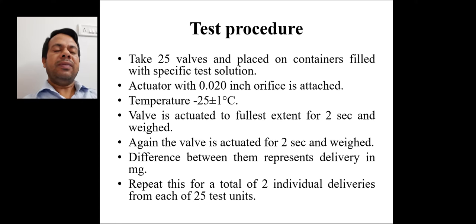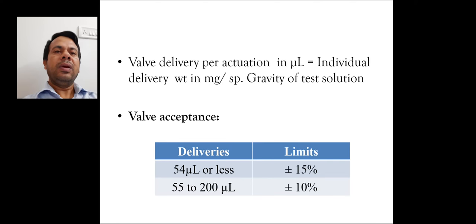So in summary, what is being done here is in first valve actuation if the weight is W1 and second actuation if the weight is W2, then the delivery will be W1 minus W2. Valve delivery per actuation in microliters equals individual delivery weight in milligrams divided by specific gravity of test solution.